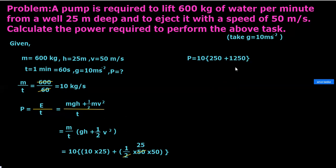Now 1250 plus 250 you will get 1500. So 10 into this 1500 is equal to how much? 15,000. So you got power P is equal to 15,000 watts.